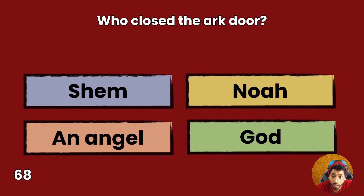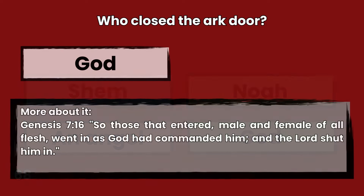Question 68: Who closed the ark door? Shem, Noah, an angel, or God? Answer: God. Genesis 7:16 — So those that entered, male and female of all flesh, went in as God had commanded him, and the Lord shut him in.